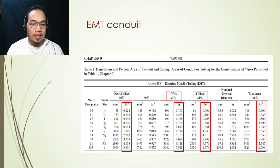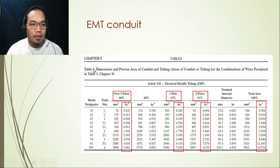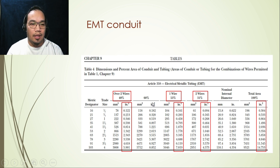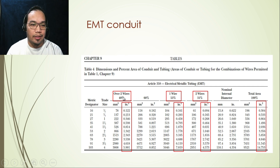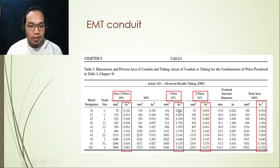This is consistent with what was explained in the table. Here is a sample table for EMT conduit used in NFPA 70, showing the different conduit sizes: 1/2 inch, 3/4 inch, 1 inch, and so on. As discussed, for one wire you can use 53% of the total area, for two wires only 31%, and for more than two wires only 40% of the total conduit area.